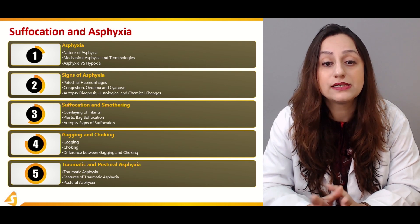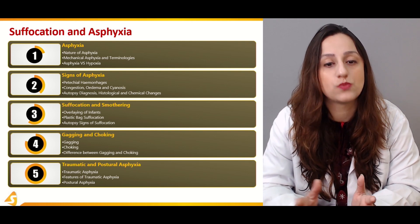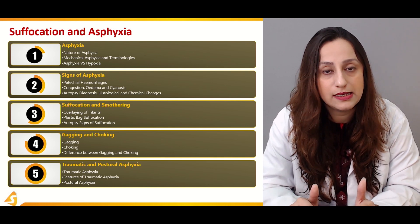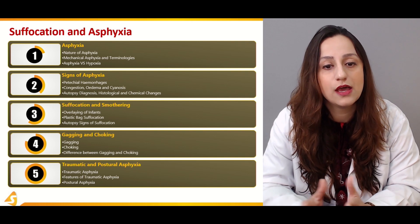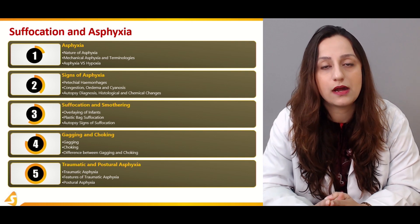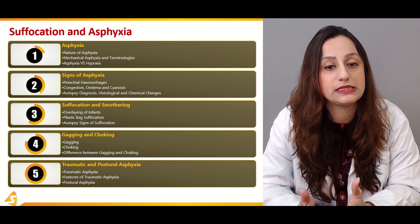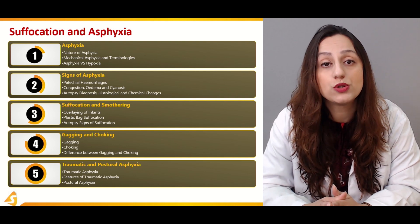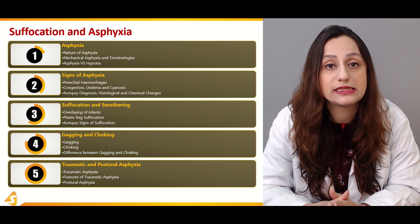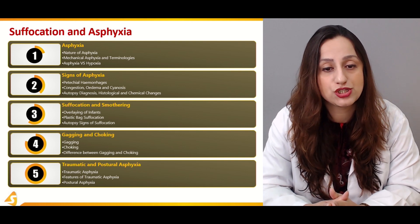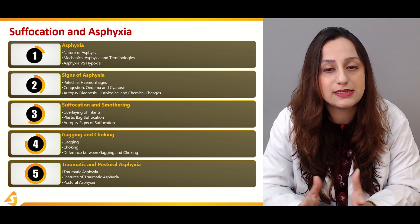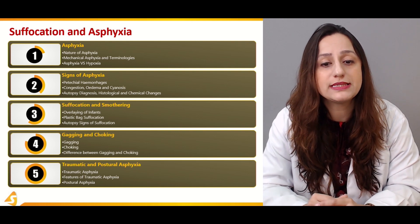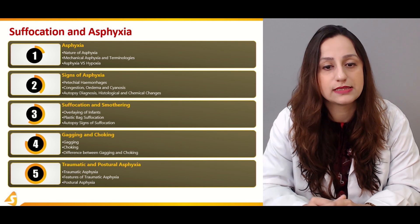Moving on, the third section discusses suffocation and smothering, two very important modes of asphyxial deaths. These include the overlaying of infants, also known as sudden infant death syndrome, and plastic bag suffocation. The autopsy signs of suffocation are also discussed in this third section.